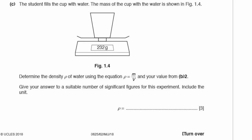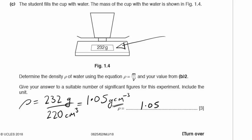Part C. The student fills the cup with water. The mass of the cup with the water is shown in figure 1.4, shown right here. To determine the density rho of water using the equation rho equals m over v. Density is given by the mass, 232 grams, divided by the volume we just calculated, which is 220 centimeters cubed. That will give you a value of 1.05 grams per centimeter cubed. We have to remember to write in our units here.